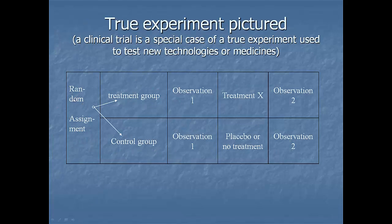So random assignment, that's the randomization that we were just talking about. You get into the treatment group, control group. The treatment is administered. So the control group can also be placebo. Or it could be treatment B.